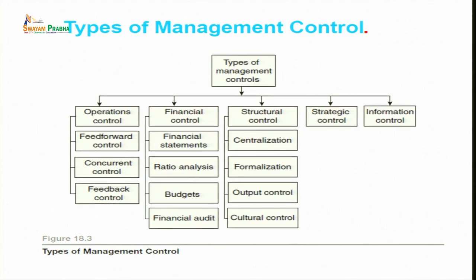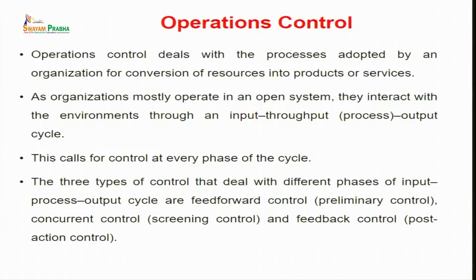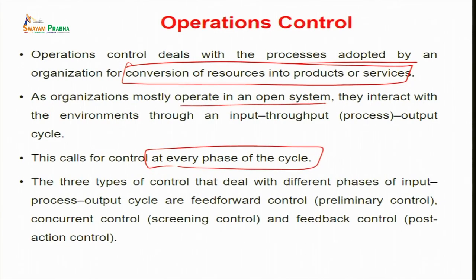Types of management control include: operational control, financial control, structural control, strategic control and informational control. Operational control deals with processes adopted by an organization for conversion of resources into products and services, and it mostly operates in an open system with external environment connection. There are three types of control dealing with different phases of the input-output cycle: feed forward control, concurrent control and feedback control.